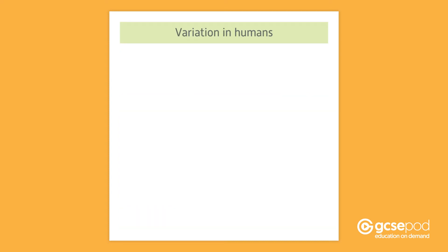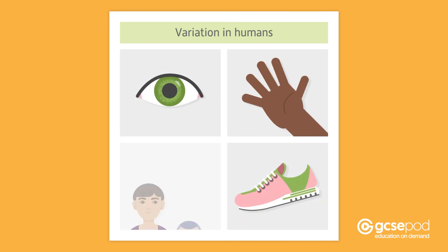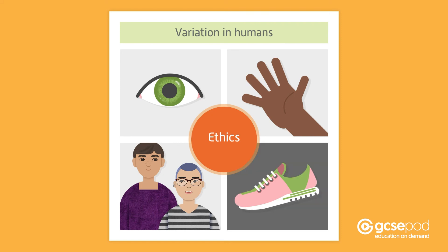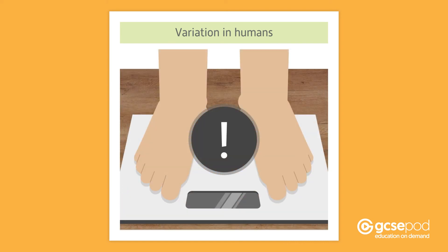Variation in humans that you can observe includes eye colour, hand span, shoe size, and height. When collecting data on humans, you have to be aware of ethics and sensitive issues. For example, people might be willing to reveal their shoe size, but might not want to discuss their weight.